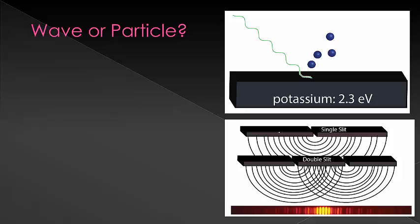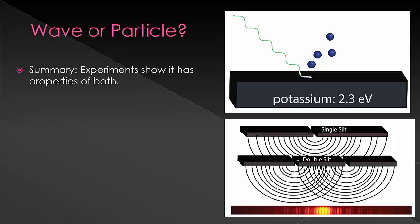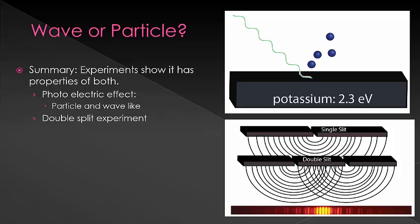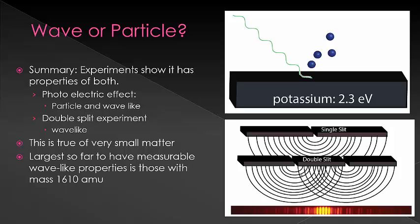Let's summarize what we learned today in this very dense podcast. We started by talking about the large amounts of controversy throughout history about what light really was. Then we discussed the two experiments that solved this by showing the wave-particle duality of light — that light has both the characteristics of a wave and a particle. This is true of very small matter, and in a future podcast we'll discuss wave-particle duality of other matter as well. We talked about the photoelectric effect, showing both particle and wave-like properties, and the double slit experiment, which showed wave-like properties. As an extra tidbit, the largest object for which we've been able to measure wave-like properties so far has a mass of 1610 amu — a molecular mass of 1610.